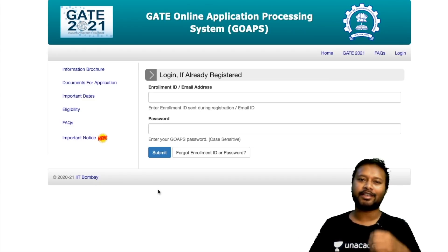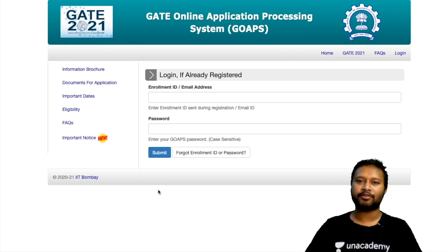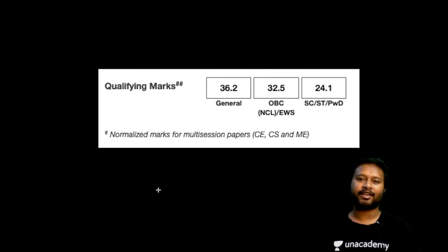The cutoff for this exam this time is very, very high. It is the highest which has happened in the past 10 years of GATE. If you have analyzed previous years' cutoffs, it was highest in 2017 at 32 marks. This time the cutoff for the general category is 36.2 marks.